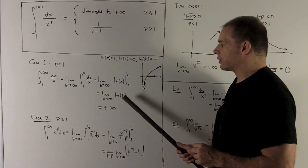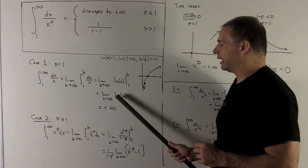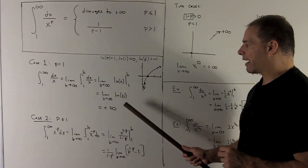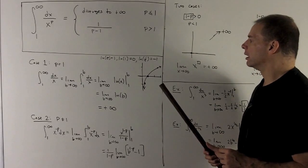Note, natural log of 1 is 0. So we're just left with a natural log of b. And then all I have to do is check the graph to see where the limit's going.